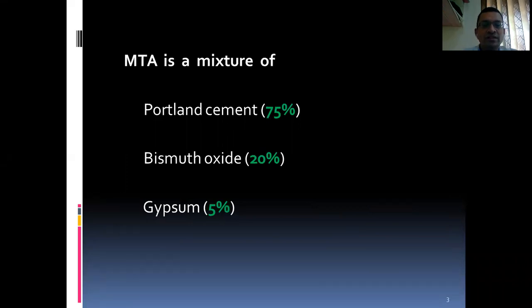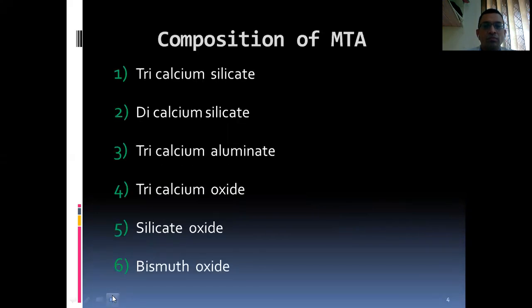MTA is a mixture of Portland cement, bismuth oxide, and gypsum. The composition of MTA consists of tricalcium silicate, dicalcium silicate, tricalcium aluminate, tricalcium oxide, silicate oxide, and bismuth oxide.